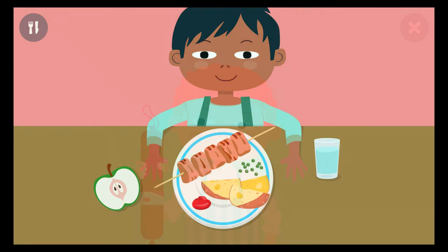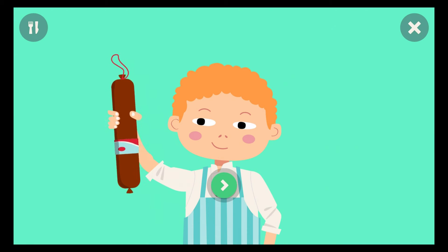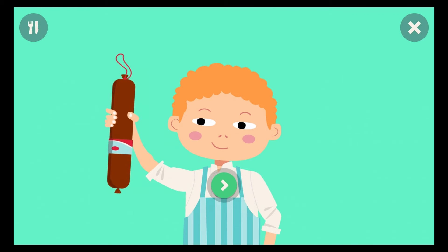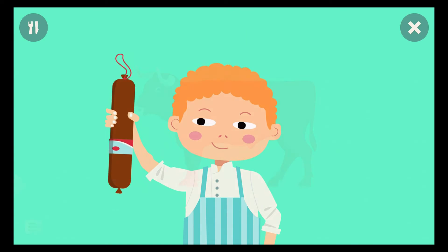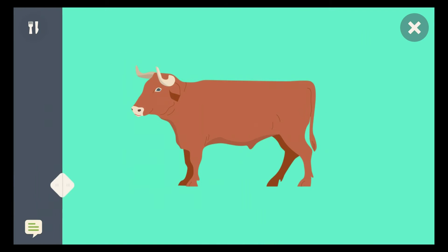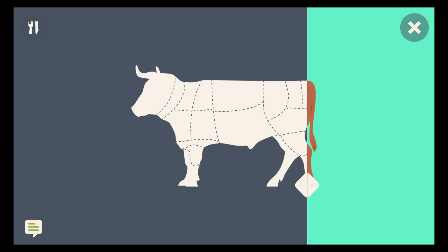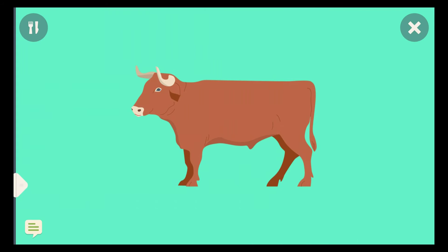Next up is everything about sausage. Meat is a key ingredient of many dishes. It can also be processed into a number of other different things.